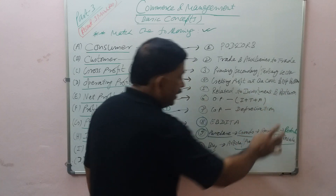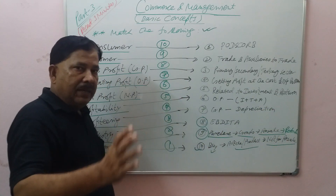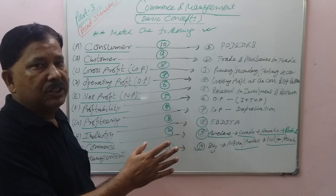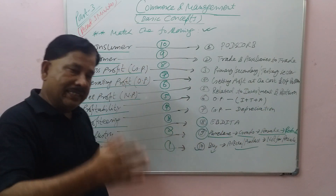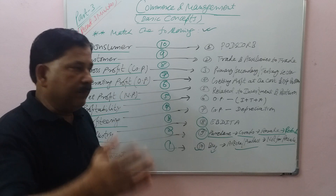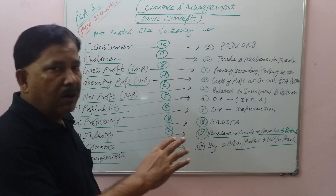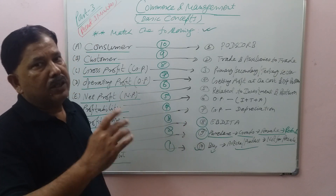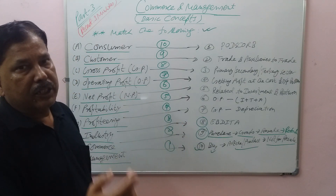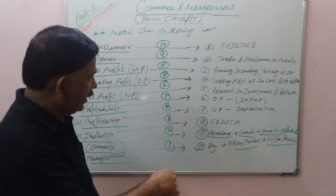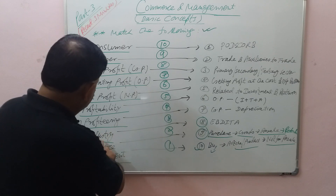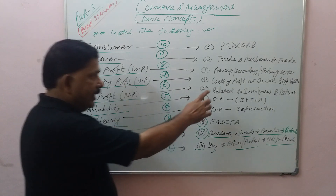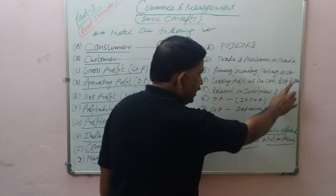Profitability is related to investment and return. There are three types: investment at zero risk, investment at par risk, and investment at premium risk. And return types include return on investment, return on assets, and return on equity. Watch that video for full details.